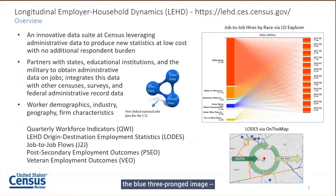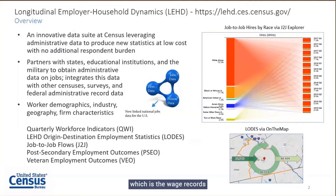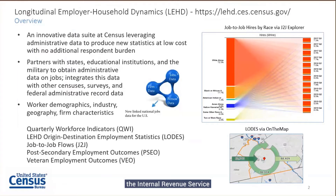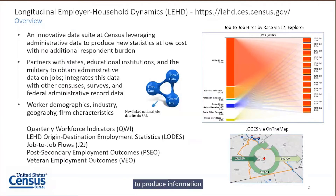We use establishment or firm data, jobs data (which is wage records on individuals), and person data. That person data comes from various census surveys and other federal administrative record data, including the Office of Personnel Management and, more recently, the Internal Revenue Service W-2 forms. We use that information within LEHD to produce information by demographics of individuals and also by employer characteristics.